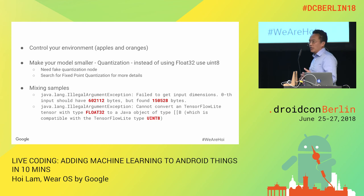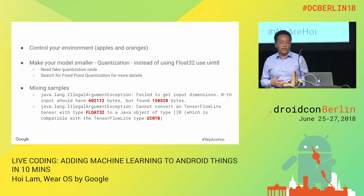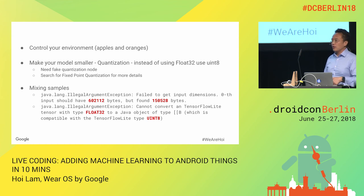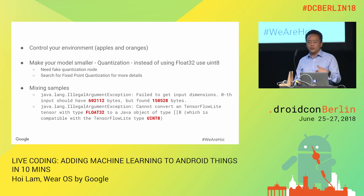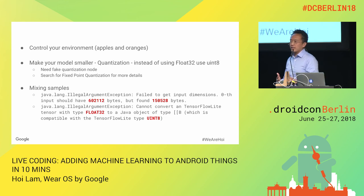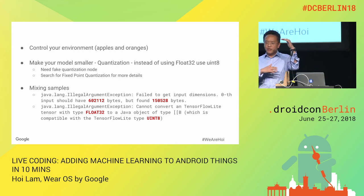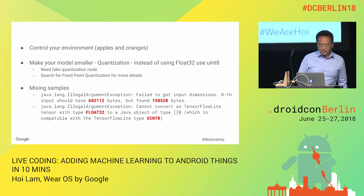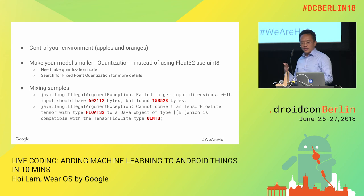Second, to make your model smaller, there is a method called quantization. Instead of using float32, you use an unsigned int, which is basically a quarter of the size. To do that, when training your model, you need to insert what we call fake quantization nodes, which specify the maximum and minimum so that at the end of your training process there are hints as to what range the unsigned int should cover. Search for fixed-point quantization for more detail.